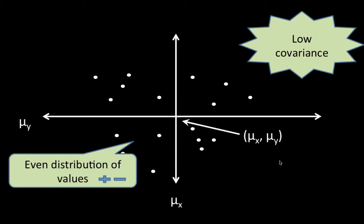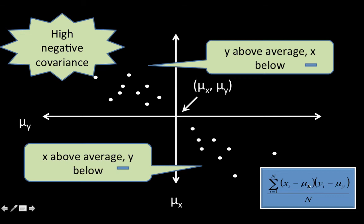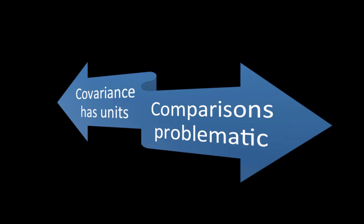Just like we discussed earlier, if you look at the formula for covariance, x minus mu_x has the units in which x is measured — let's say x is height, so x minus mu_x might have inches as its units. And if y is measuring weight, y minus mu_y might have pounds as its unit. Therefore, covariance has a unit of measure like inches times pounds — very hard to interpret. That's one problem with covariance: the units are difficult to interpret. We would ideally like a unitless, dimensionless measure to compare the extent of relationship between multiple attributes.